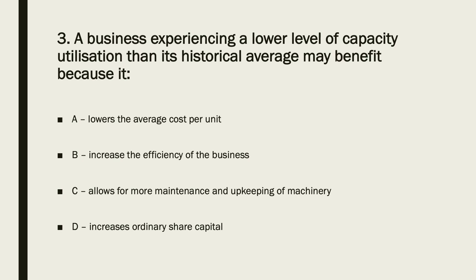Capacity utilisation is reducing. 'Lowers the average unit cost' can't be right because that's associated with higher capacity utilisation, as is 'increases efficiency.' D is nonsense. So C is the remaining answer — C allows for more maintenance and upkeeping of machinery. C is the answer.